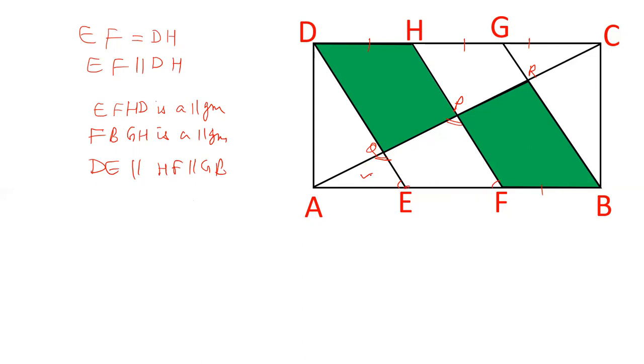Triangle AEQ is similar to triangle AFP. And AE is half of AF. AE is equal to 1/2 AF. If the two triangles are similar, the ratio of their areas is the square of their sides.